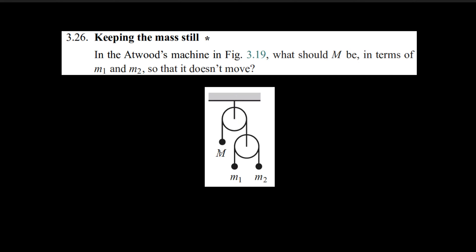In this problem, we need to express capital M in terms of M1 and M2 such that this capital M mass is going to stay still. So these two can move, but this is going to have to stay still. We can do this by establishing the equations of motion by considering the force. In this string over here, it has a tension of T, and then this tension is going to pull this mass upwards. There is also going to be a gravitational force that's going to pull it downwards.